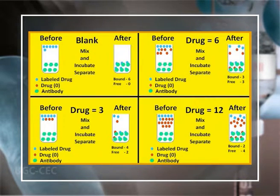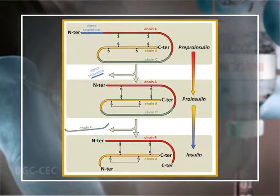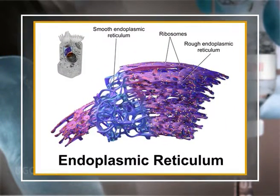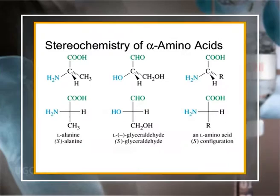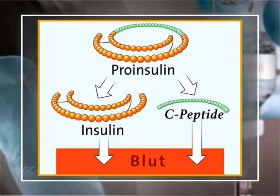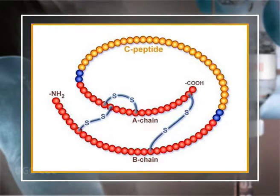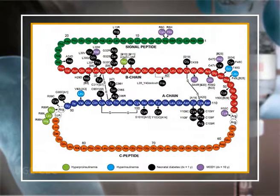Insulin was the hormone for which Yalow and Berson first developed the radioimmunoassay. The B cells of pancreatic islets synthesize insulin from a single-chain precursor of 110 amino acids termed pre-pro-insulin. After translocation through the membrane of the rough endoplasmic reticulum, the 24-amino-acid signal peptide of pre-pro-insulin is cleaved rapidly to form pro-insulin. The pro-insulin then folds and disulfide bonds form. During conversion of human pro-insulin to insulin, four basic amino acids and the remaining connector or C peptide are removed by proteolysis.